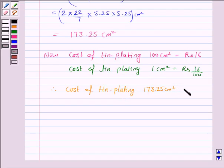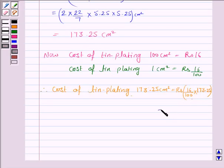This equals 173 upon 100 into 173.25, and it is equal to rupees 27.72.